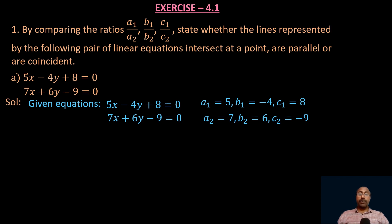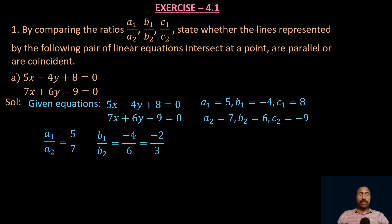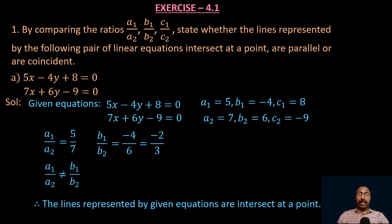Now let us find the ratio of corresponding coefficients. a1/a2 = 5/7. And b1/b2 = −4/6 = −2/3. Here a1/a2 is not equal to b1/b2, so we need not find c1/c2. According to the table, the lines represented by the given equations intersect at a point.